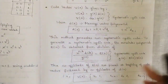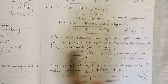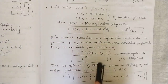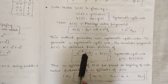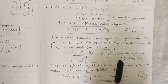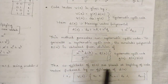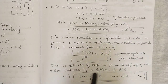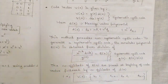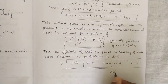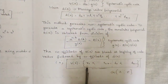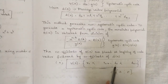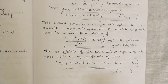Direct multiplication of d(x) and g(x) generates non-systematic cyclic codes. To generate systematic cyclic codes, the remainder polynomial r(x) is obtained from division: r(x) = x^{n-k}·d(x) / g(x). In systematic form, the code polynomial is r(x) combined with d(x) — the coefficients of r(x) are placed at the beginning of the code vector, followed by the coefficients of d(x), giving a total of n bits.